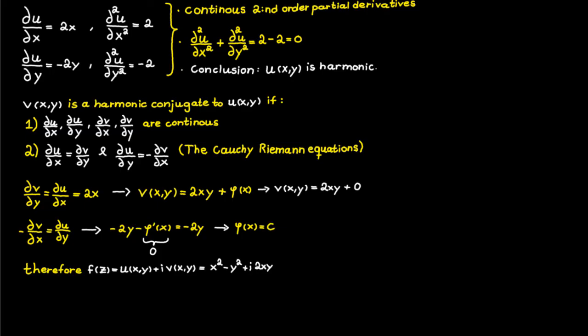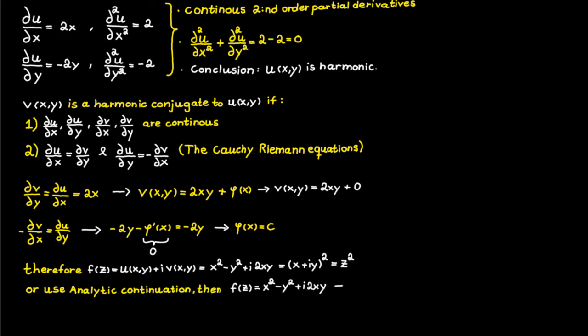Now we just rewrite f as a function of z, which we can do in two ways. First, you might recognize that this function is simply z squared — the square of x plus i times y. Alternatively, we can use analytic continuation: observe f on the real axis where x equals z and y equals zero. Inserting this gives f equals z squared. This trick is very useful for more complicated functions — most of the time it is enough to let x equal z and set y equal to zero.